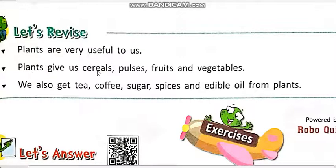Plants give us cereals, pulses, fruits and vegetables. Plants ہمیں cereals، pulses، fruits and vegetables دیتے ہیں.